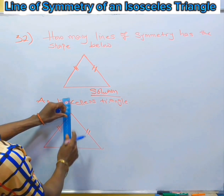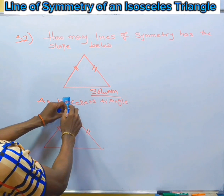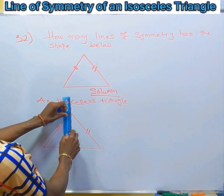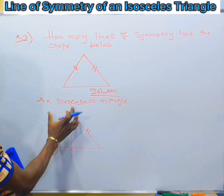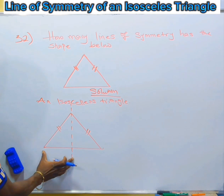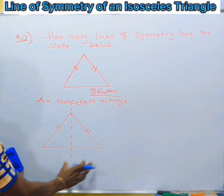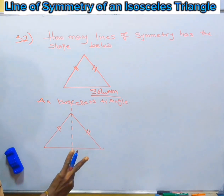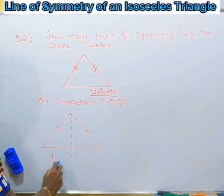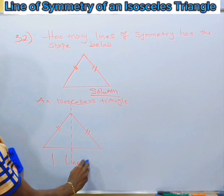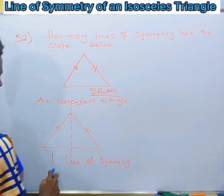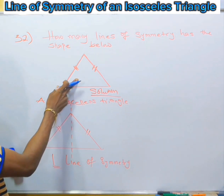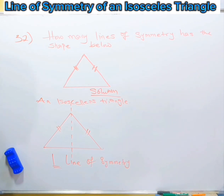Since this side is equal to this side, we can have our line of symmetry as a vertical line. If we have one line of symmetry like this, it divides the shape into the left and the right — two equal halves. So we have one line of symmetry for an isosceles triangle.